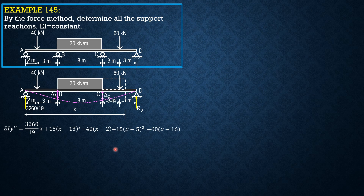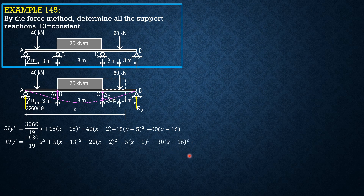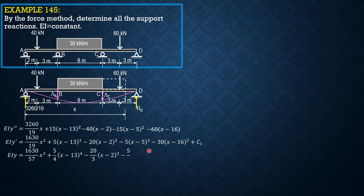Continuing: minus 60(x minus 16). Integrating once, EI·y' equals (1630/19)x² plus 5(x minus 13)² minus 20(x minus 2)² minus 5(x minus 5)³. Integrating again, EI·y equals (1630/57)x³ plus (5/4)(x minus 13)⁴ minus (20/3)(x minus 2)³ minus (5/4)(x minus 5)⁴ minus 10(x minus 16)³ plus C₁·x.